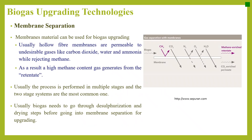Membrane separation. Membrane material can be used for biogas upgrading. Hollow fiber membranes are permeable to undesirable gases like carbon dioxide, water and ammonia while rejecting methane. As a result, a high methane content gas is generated from the retentate. The process is typically performed in multiple stages, with two-stage systems being the most common. Biogas needs to go through desulphurization and drying steps before entering membrane separation for upgrading.